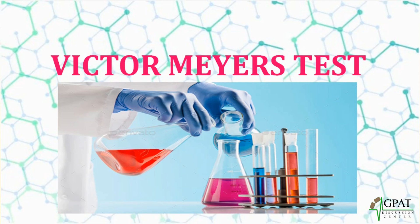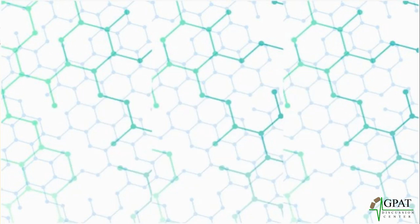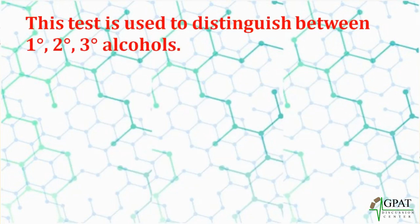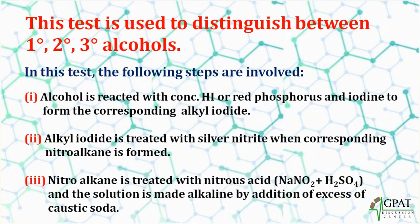This test is used to distinguish between primary, secondary, and tertiary alcohols. Three main steps are involved. Firstly, the alcohol is reacted with concentrated hydrogen iodide (HI), or red phosphorus and iodine — either combination is used — which forms the corresponding alkyl iodide.